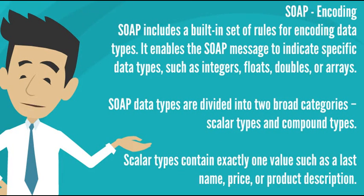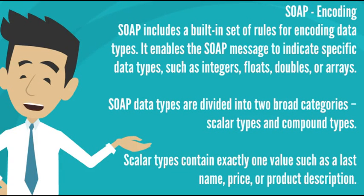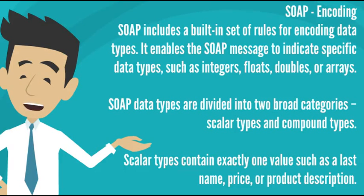SOAP encoding: SOAP includes a built-in set of rules for encoding data types. It enables SOAP messages to indicate specific data types such as integers, floats, doubles, or arrays. SOAP data types are divided into two broad categories: scalar types and compound types. Scalar types contain exactly one value, such as a last name, price, or product description.